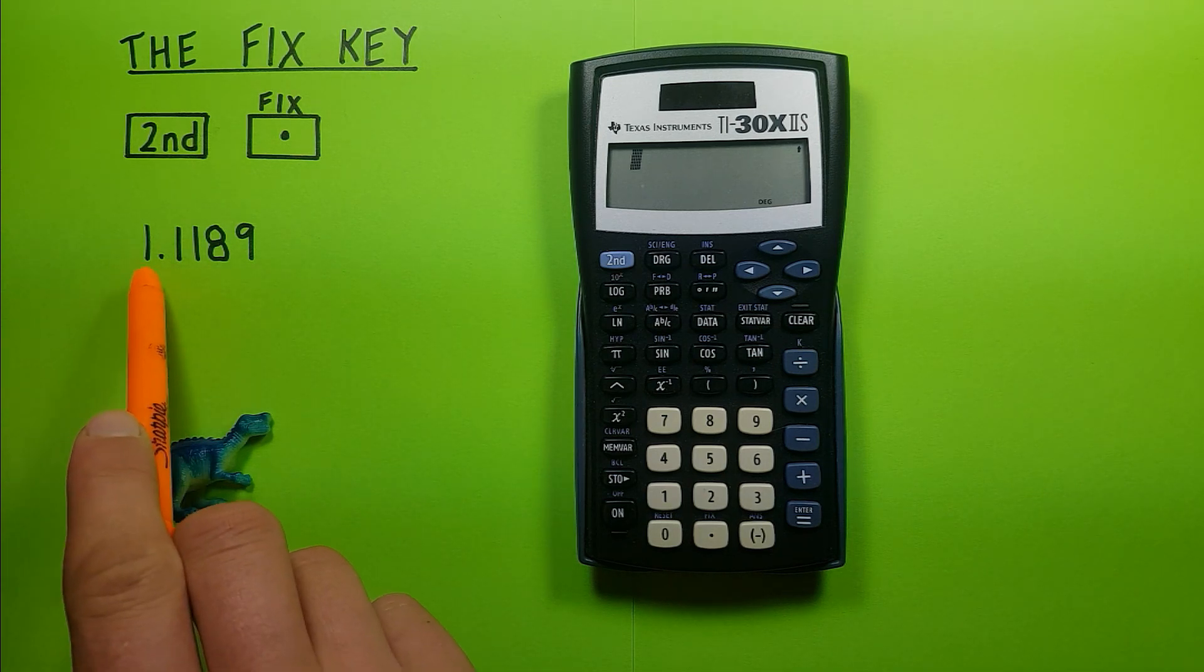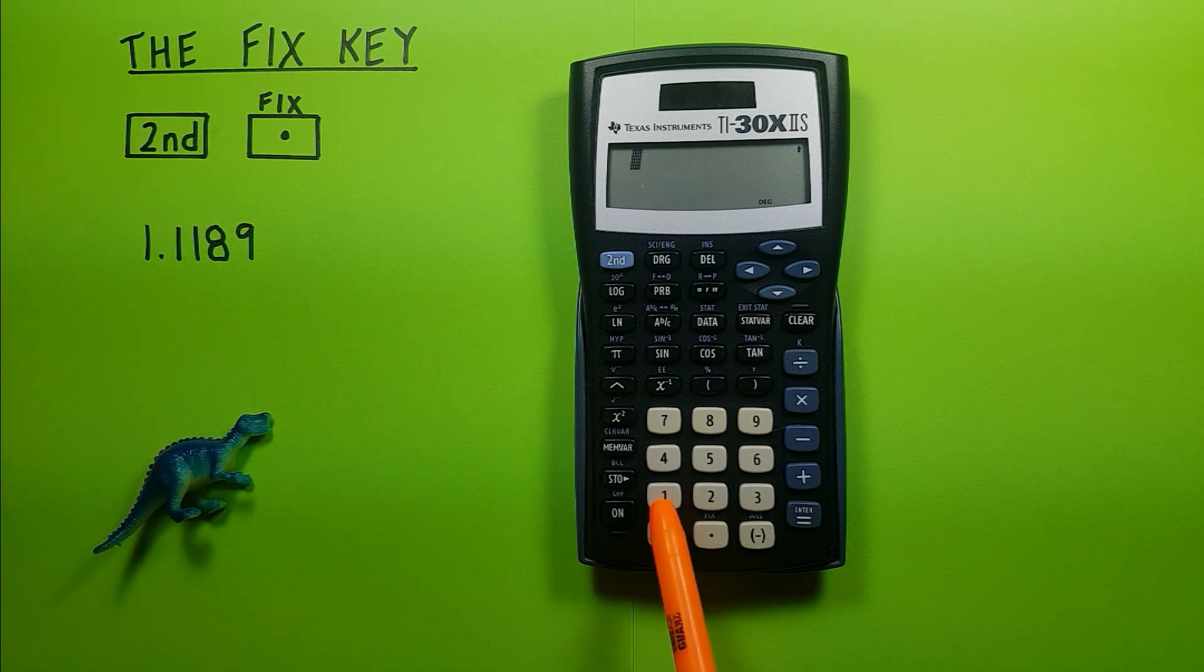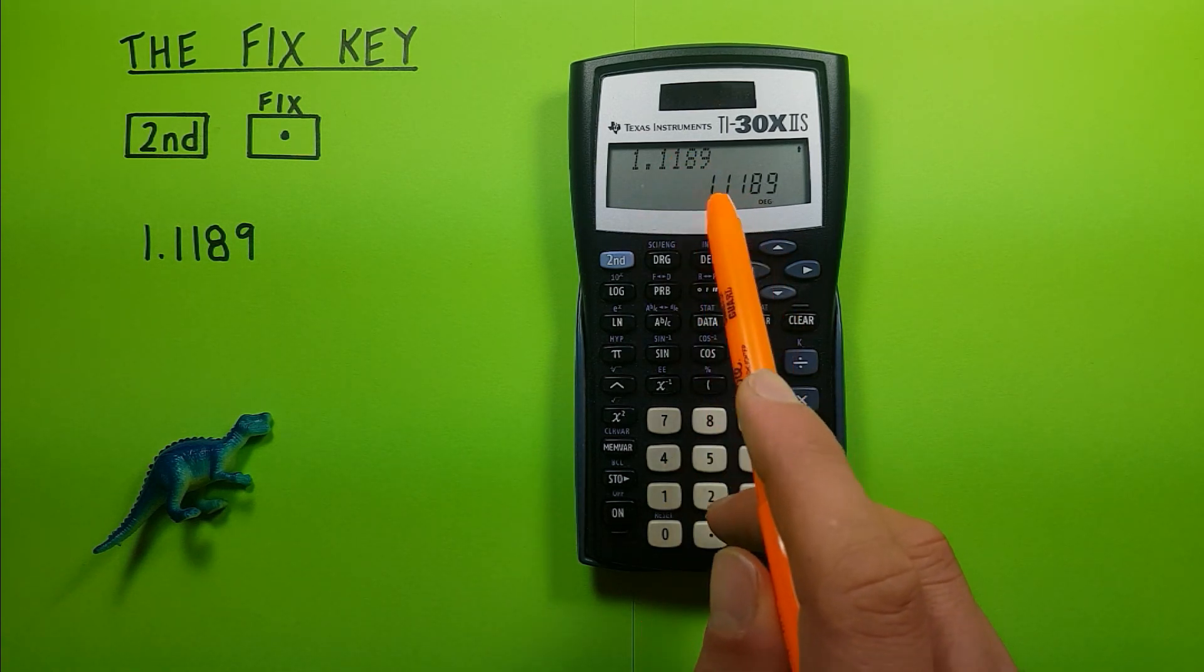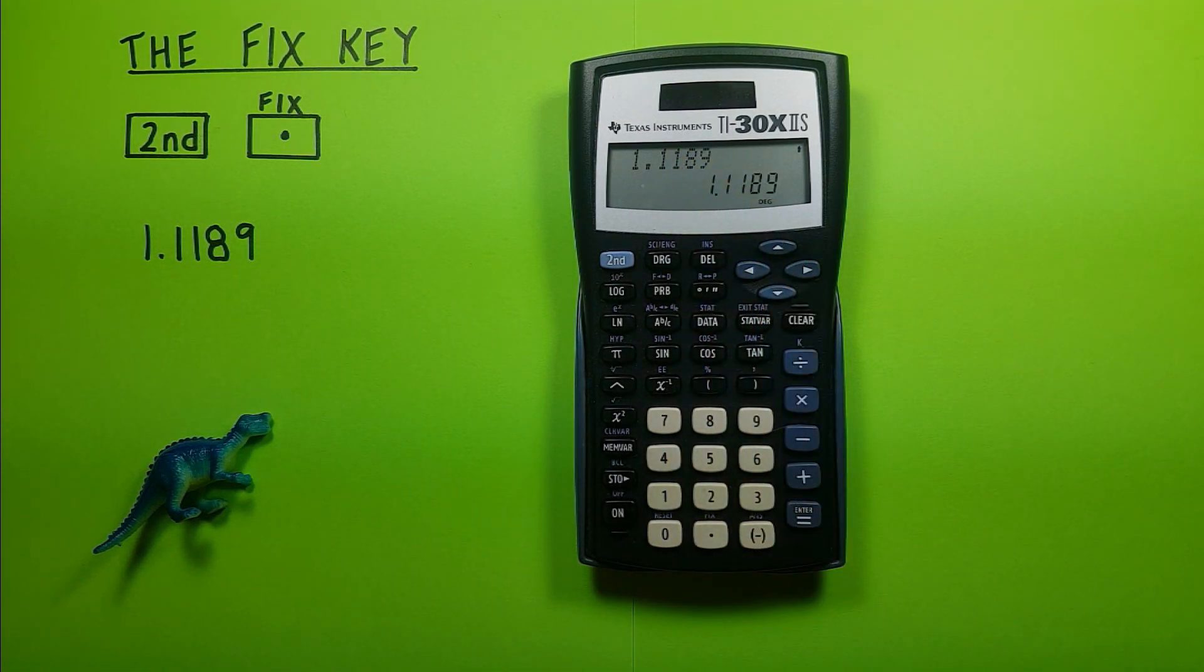So let's say we had the number, this number right here, 1.1189 on our screen and we press enter. Now we see we get the full number down there with all its decimals.